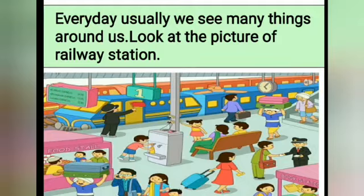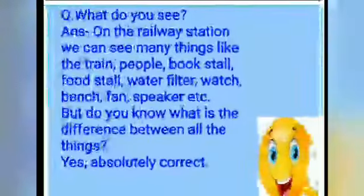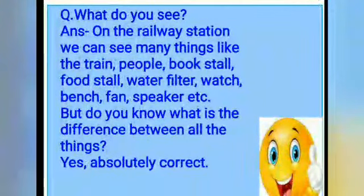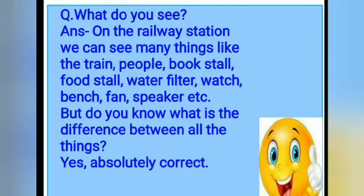There are different types of things around us. They can be living things or non-living things. Every day, usually we see many things around us. Look at the picture of a railway station. What do you see? On the railway station, we can see many things — like the train, people, bookstall, foodstall, water filter, watch, bench, fan, speaker, etc.